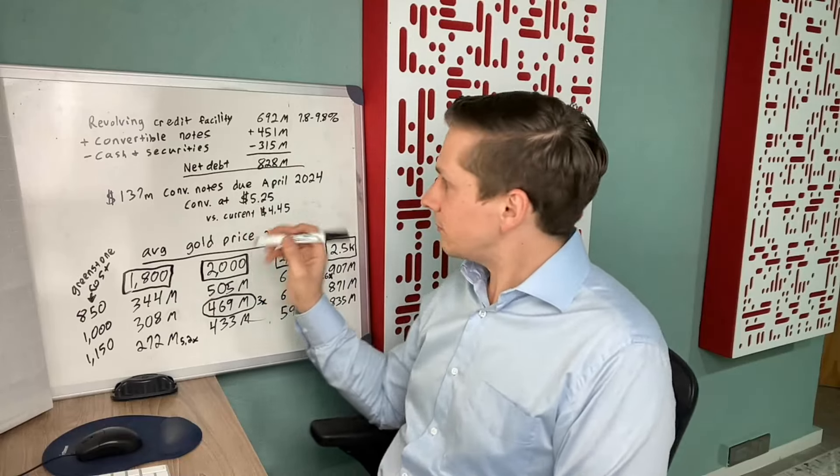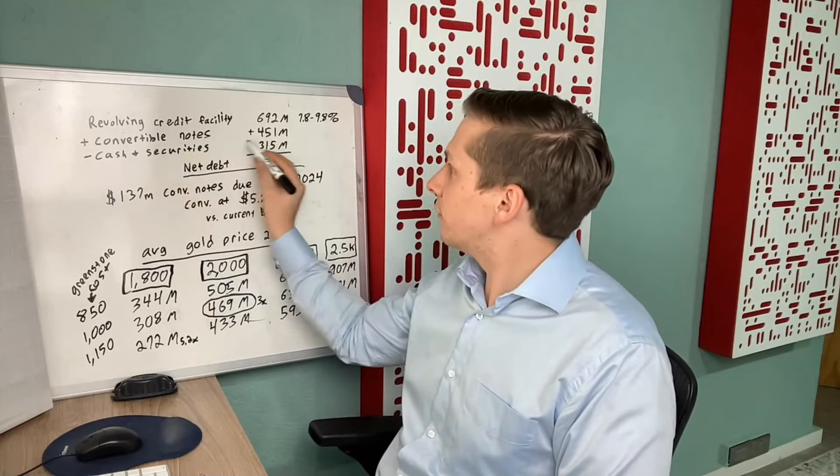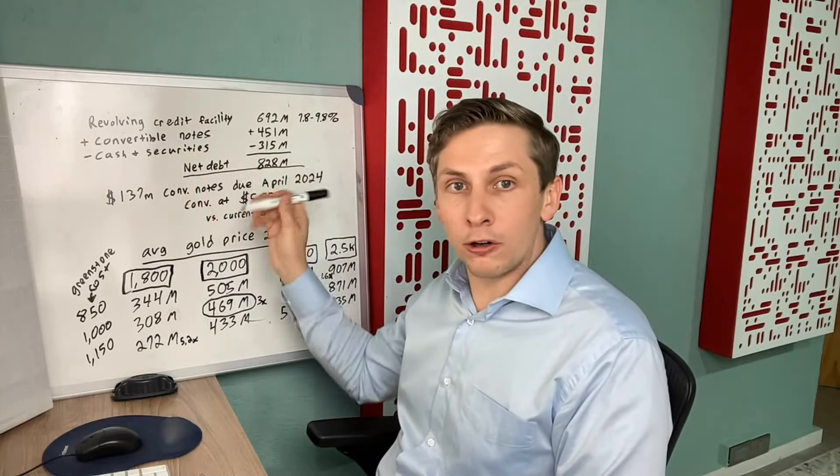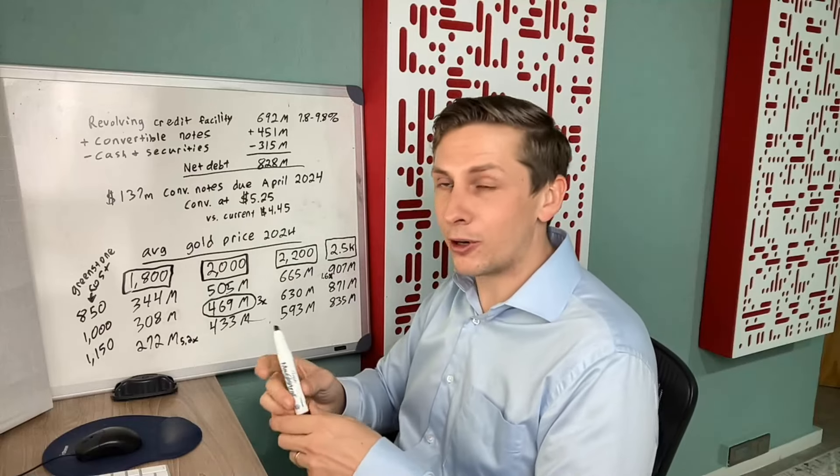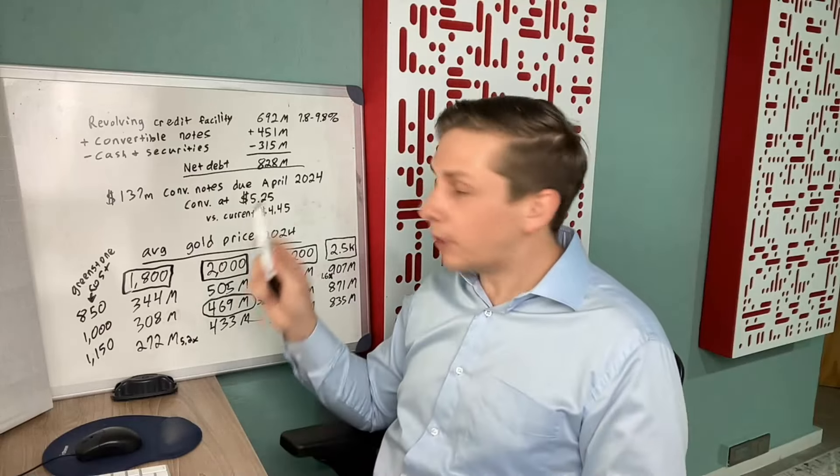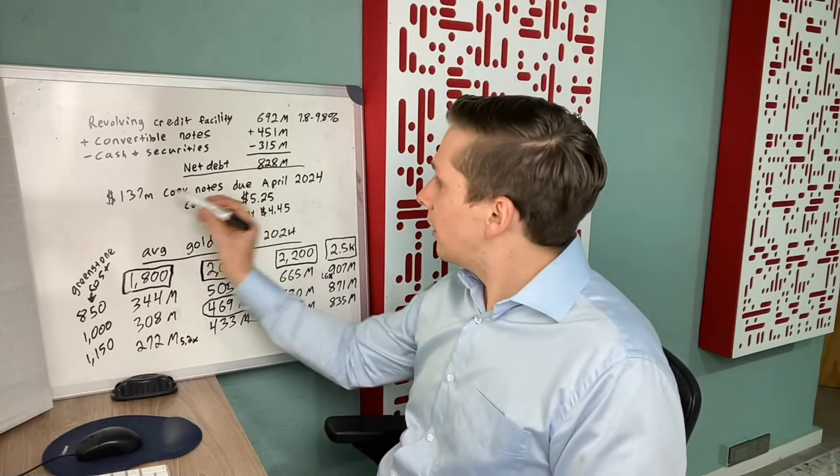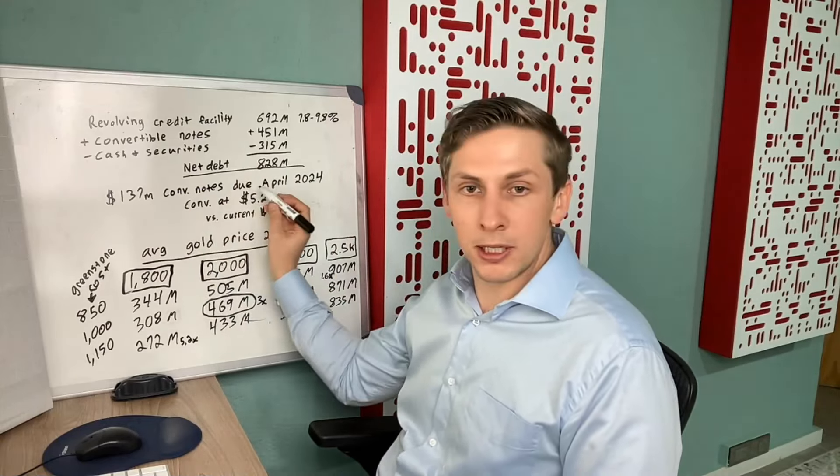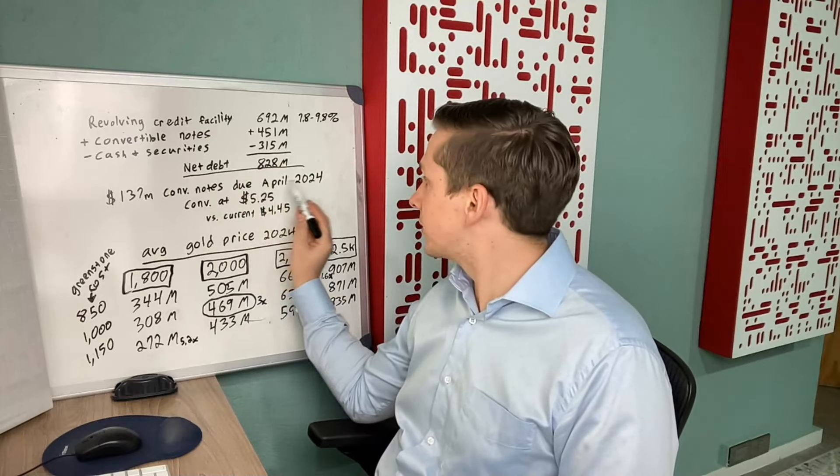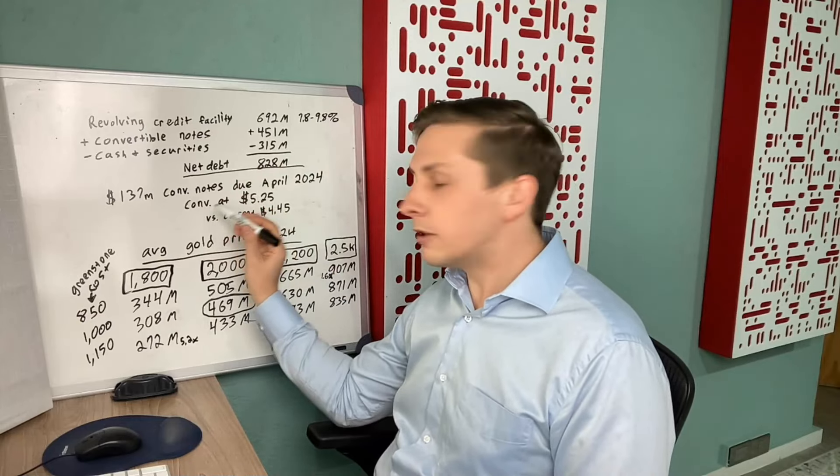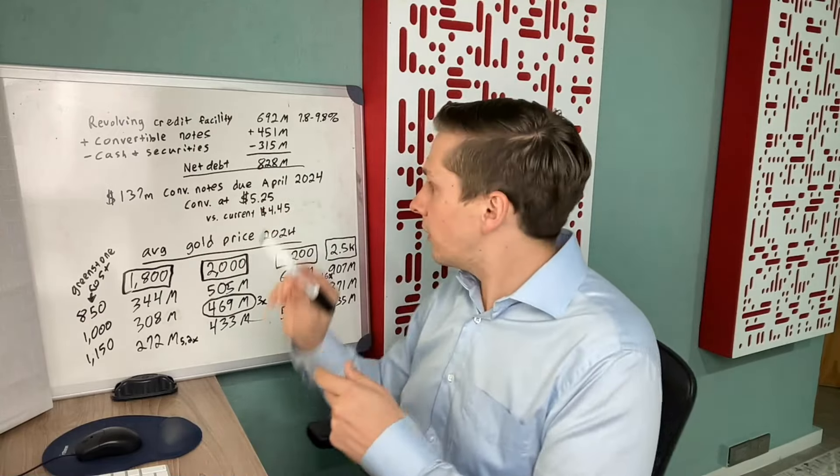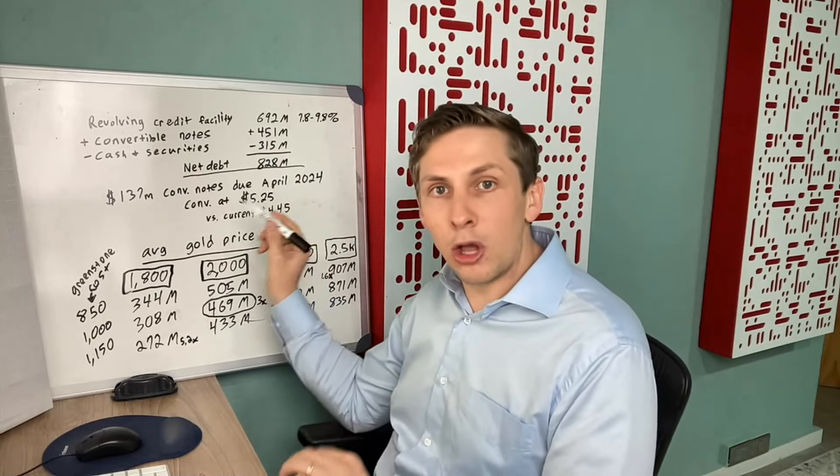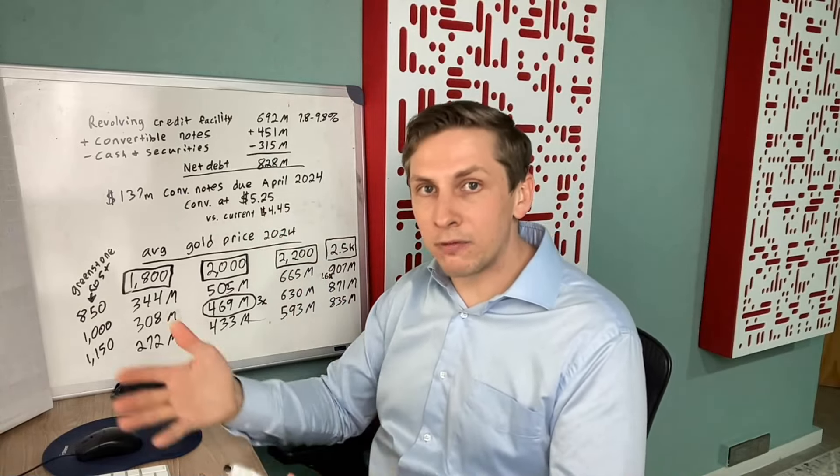They have convertible notes of $451 million, none of which are in the money right now. Today's closing price was $4.45. But they do have $137 million of those coming due in just three months, and those convert at $5.25. They're convertible at $5.25 into shares.